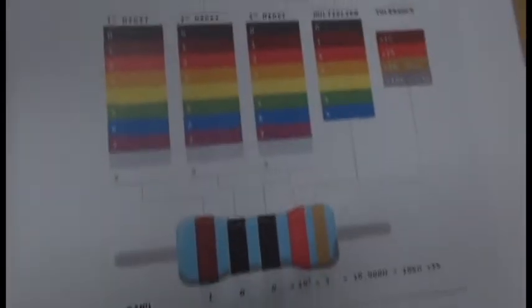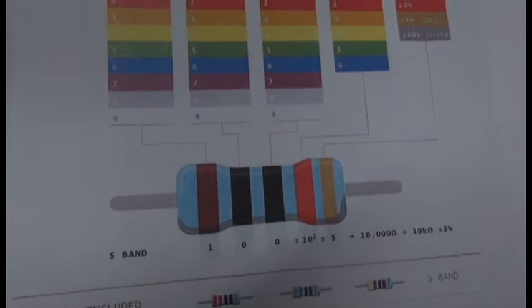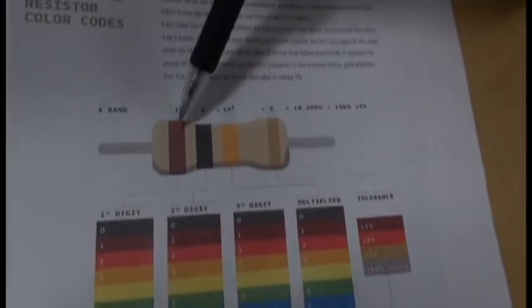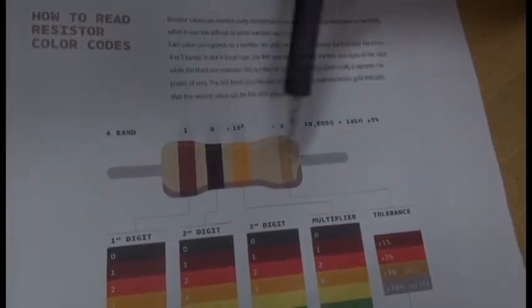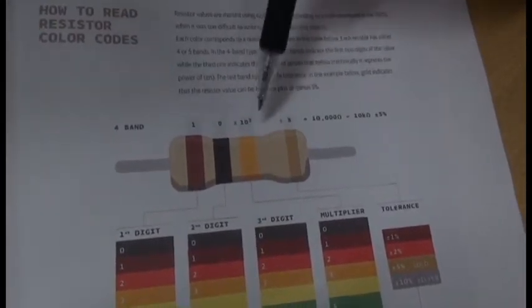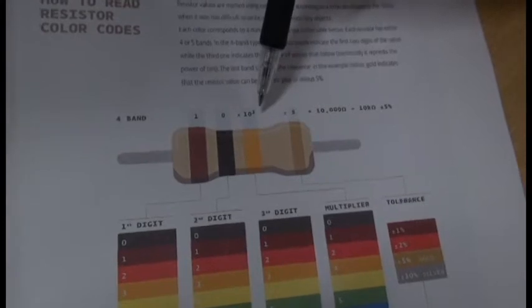For four band resistors, the first band is the first numeric digit, the second band is the second numeric digit, and the third band is the exponent, or multiplier of ten to give the total resistance.